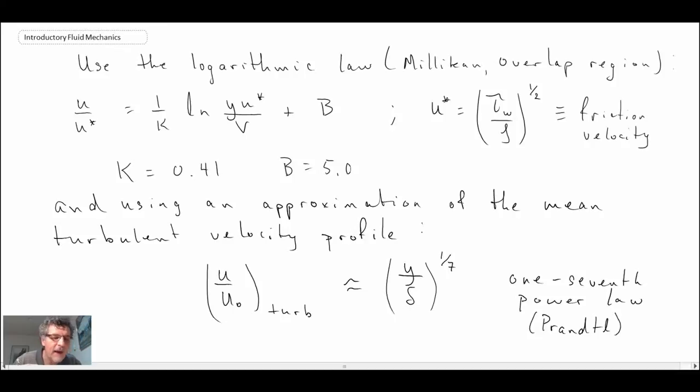So coupling that with Milliken's overlap region, again, I'm going to skip over all the details, but the main results that came out of this were an expression for the boundary layer thickness and the friction coefficient.